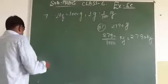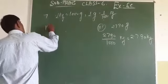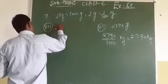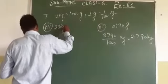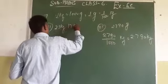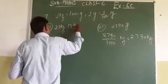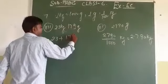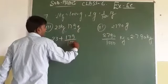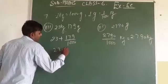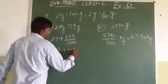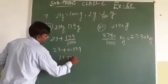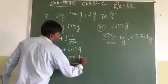Now let us do question 7 part 7: 23 kilogram 179 gram. We write this as 23 plus 179 upon 1000, which equals 23 plus 0.179, giving us 23.179 kilogram.